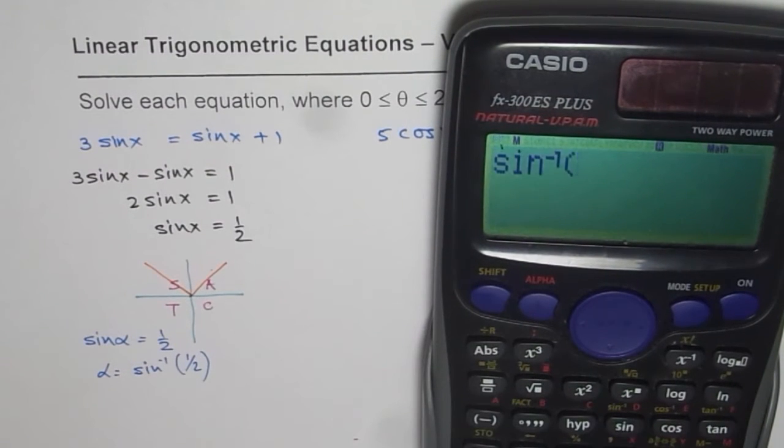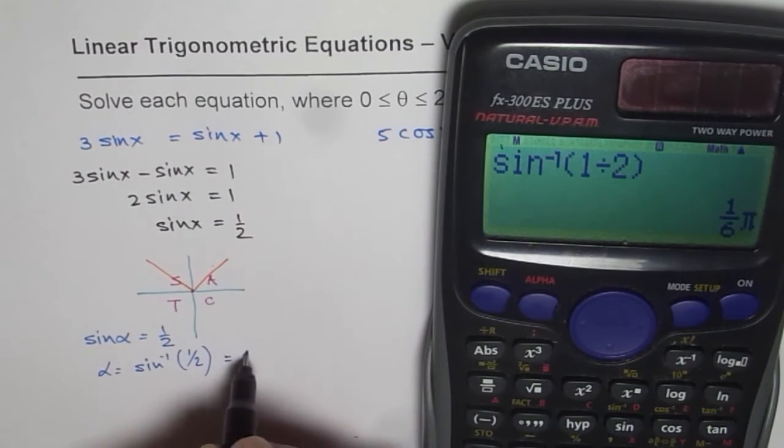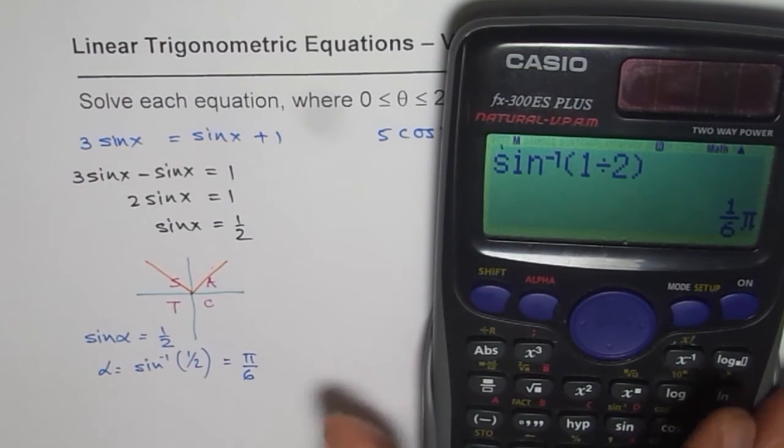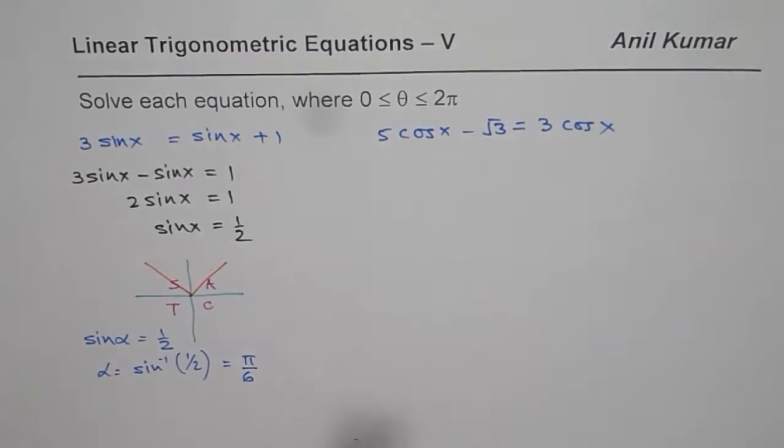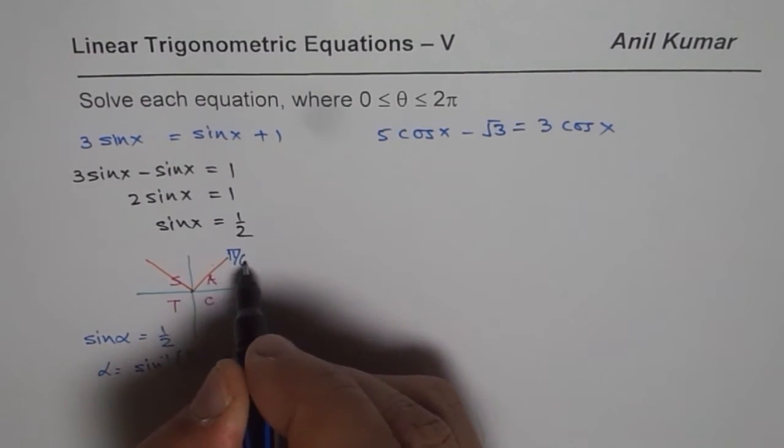So that gives us alpha equals to sin inverse of half. So we will use shift sin, sin inverse that is, and 1 divided by 2 bracket close equals to, we get pi by 6. So we get alpha equals to pi by 6. So that is the acute angle.